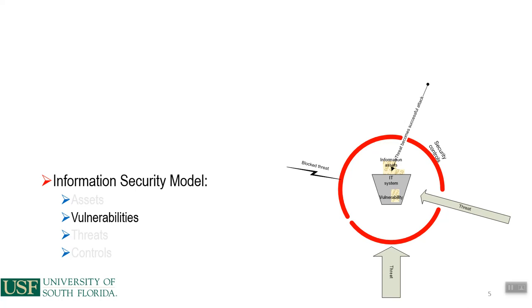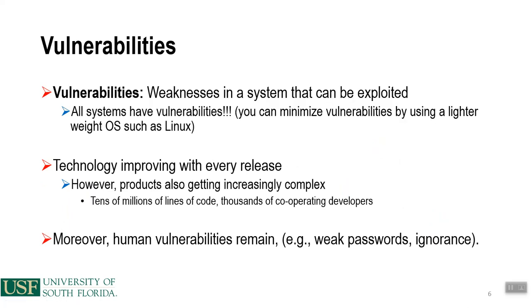A vulnerability is a weakness in a system that can be exploited. All systems have vulnerabilities, but you can minimize them by using a lighter-weight operating system such as Linux. Technology is improving with every release, but products are getting more complex. Think about an iPhone — it has a camera, recorder, phone capabilities, internet, Bluetooth, and many apps. All of those have thousands of lines of code, and as the code base increases, there may be more vulnerabilities.